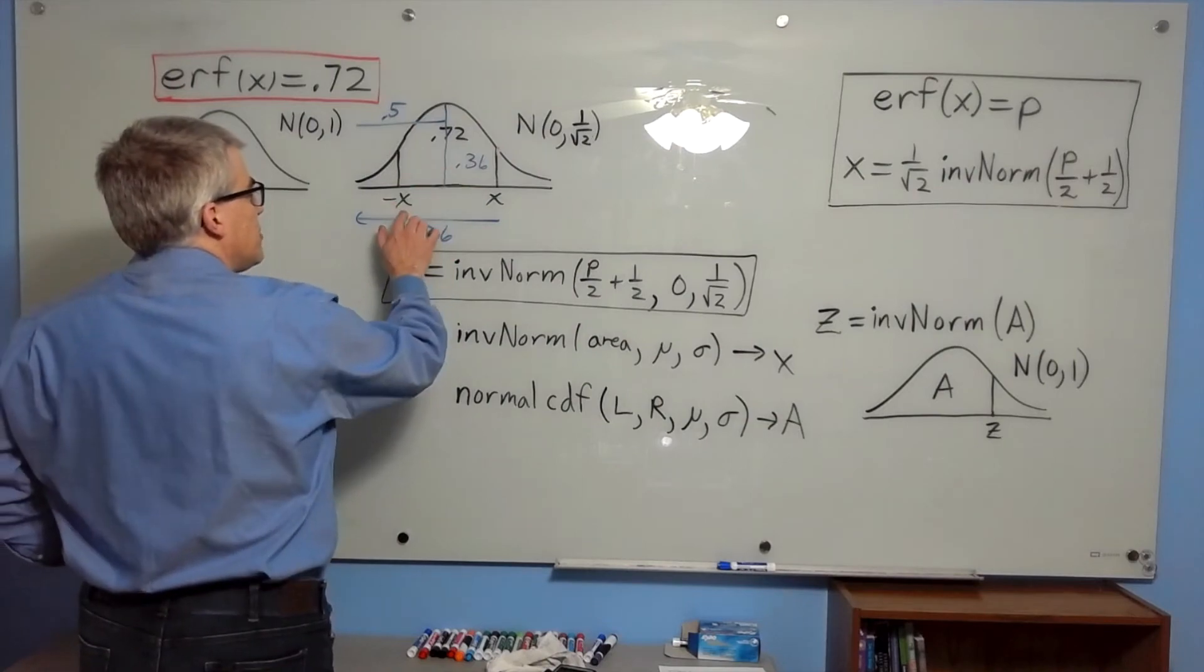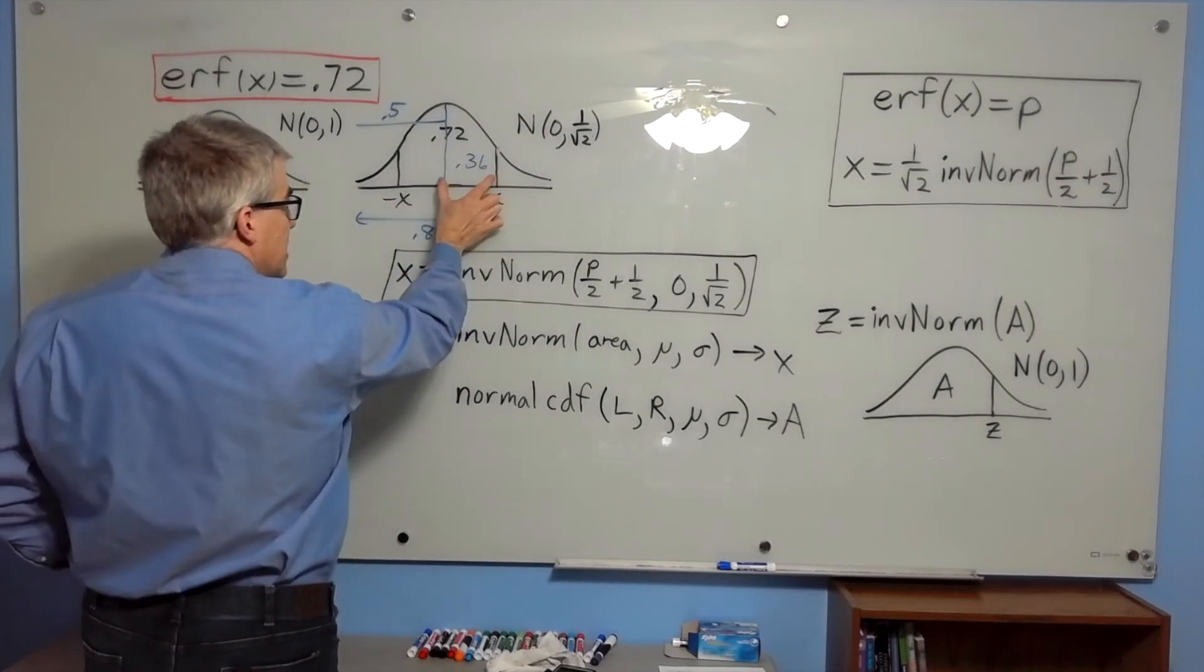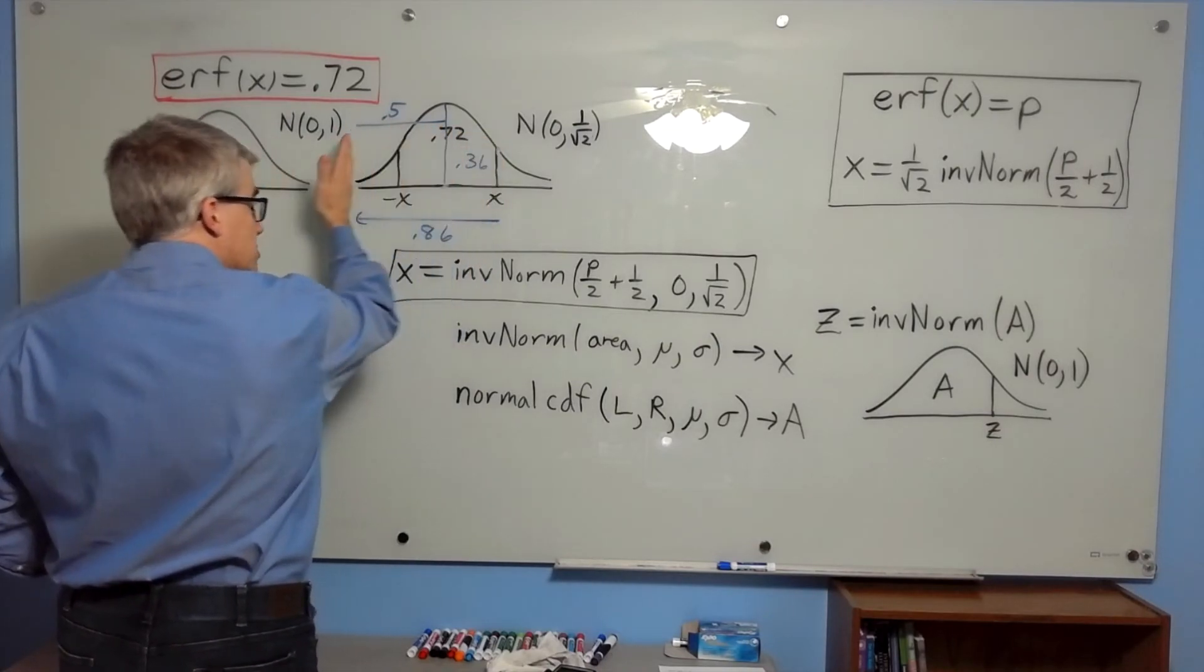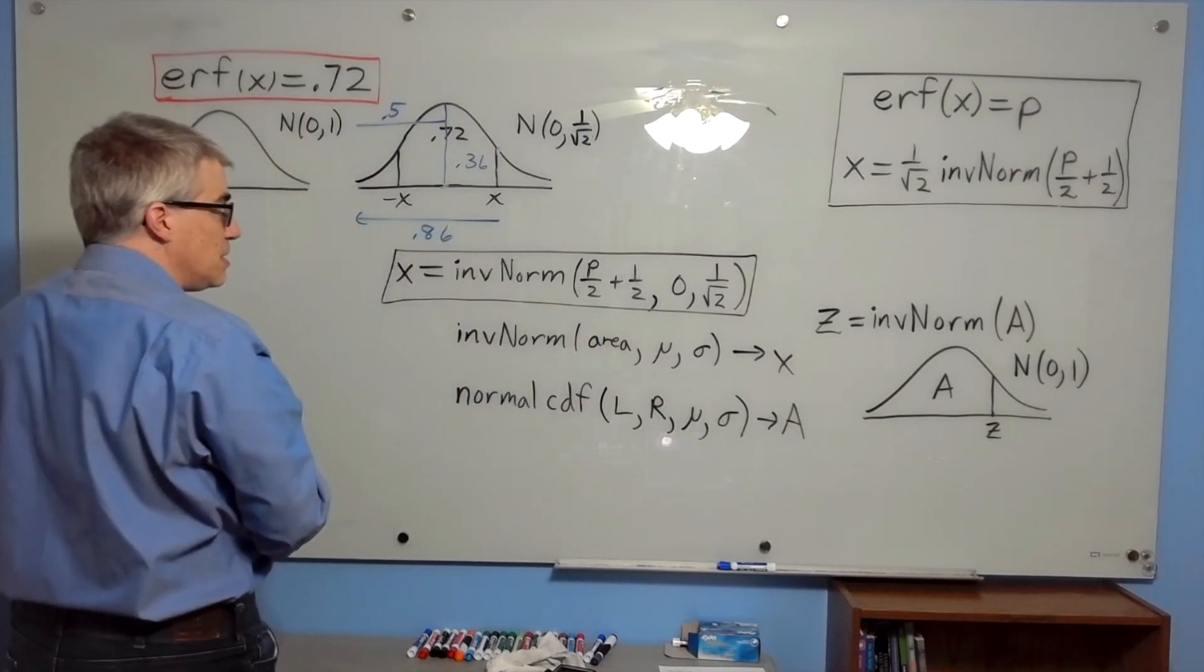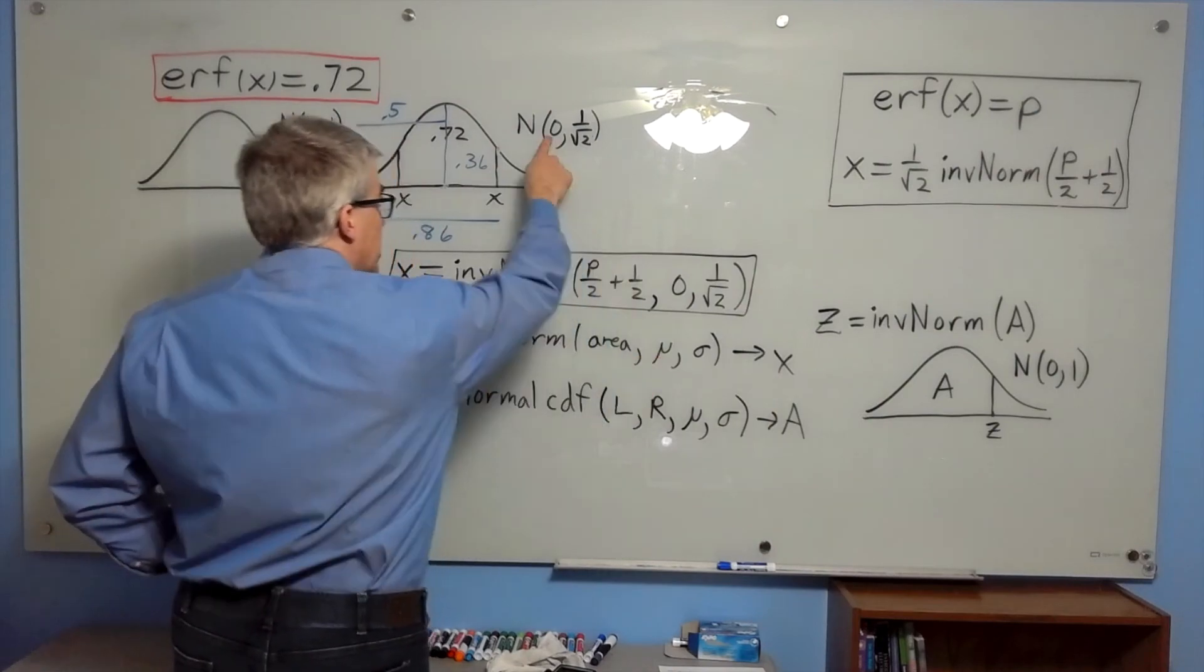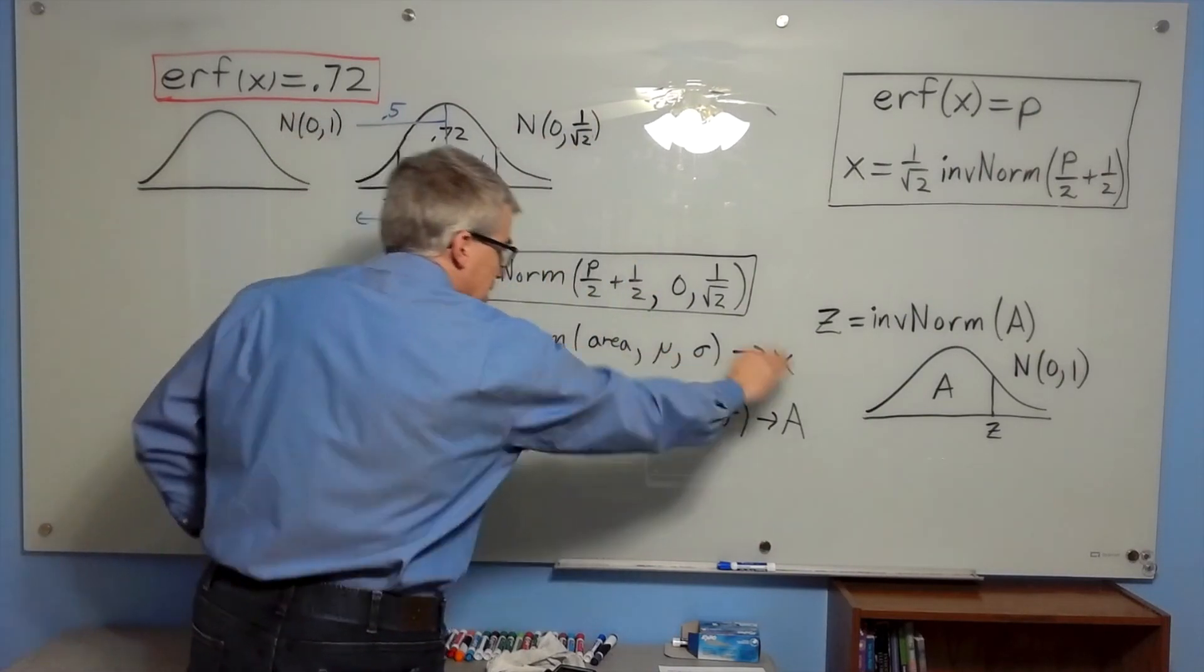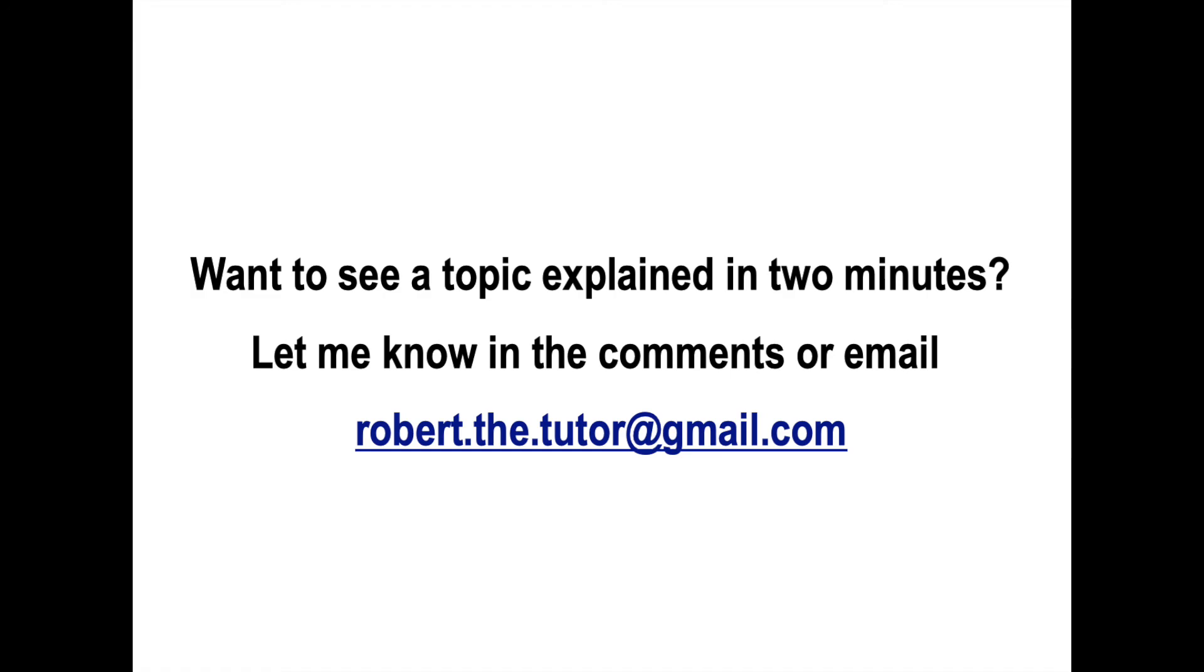Because if the area between minus x and x is 0.72, then half of that is 0.36. This area is 0.5, so all that area is 0.86. So the area I would put in is 0.86. The mean is 0, and the standard deviation is 1 over the square root of 2, and that will simply give you the answer.